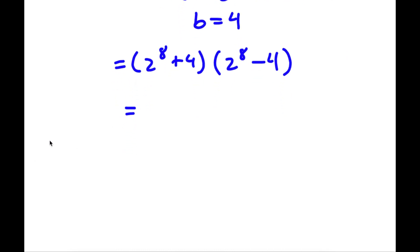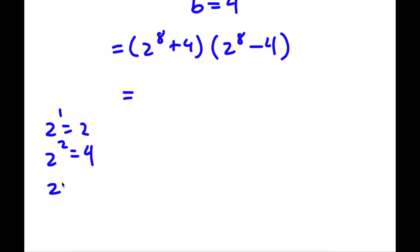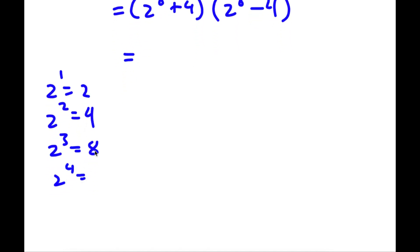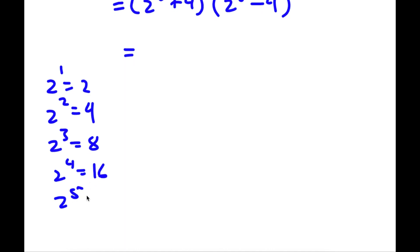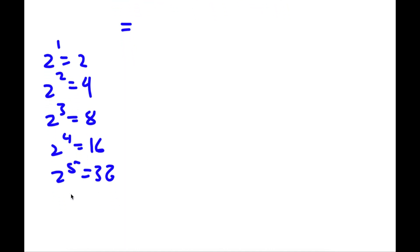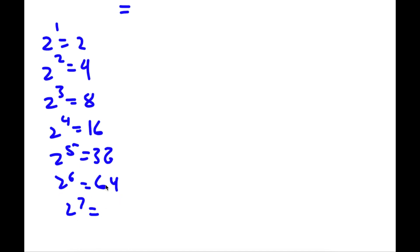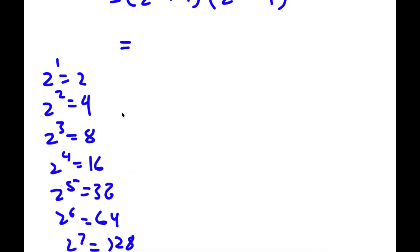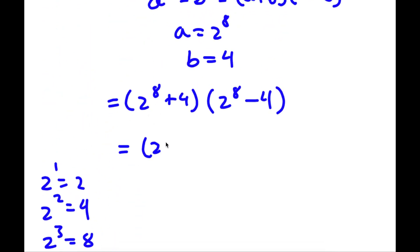Now 2 to the power of 8 — 2 to the power of 1 is 2, 2 to the power of 2 is 4, 2 to the power of 3 is 8, and as you can see this just doubles: 2 to the power of 4 is 16, 2 to the power of 5 is 32, 2 to the power of 6 is 64, 2 to the power of 7 is 128, and finally 2 to the power of 8 is double of 128, which is 256. So now I have 256 plus 4, times 256 minus 4.